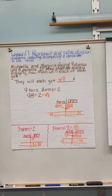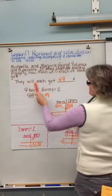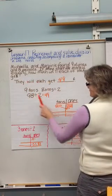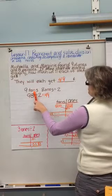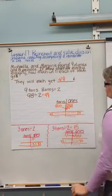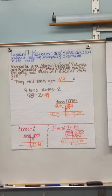Let's look at the application problem. Michaela and Marjorie found nine dimes and eight pennies. If they share the money equally, how much will each of them get? So our answer statement is they will each get blank. We have nine tens, because a dime is worth ten cents, and eight ones, because a penny is worth one cent, and we're going to divide by two.